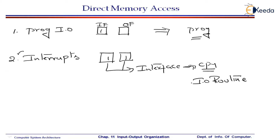Now, let us move on to the third mode of transfer which is called direct memory access. Let us understand why we require this. Interrupt is very precise and very useful — it is better than programmed I/O. So what is the need of going for direct memory access, which is the third one? Let us understand.